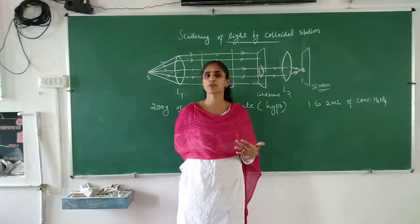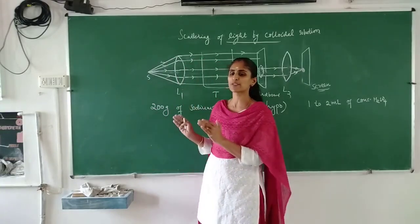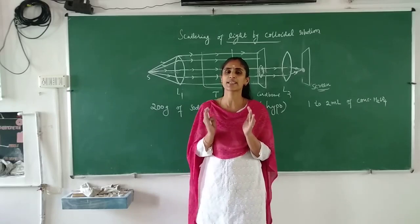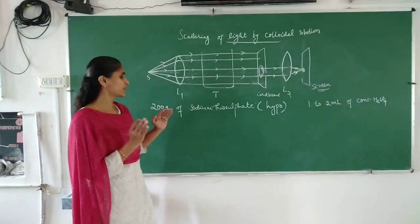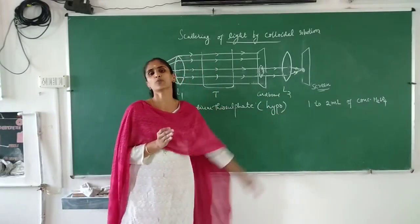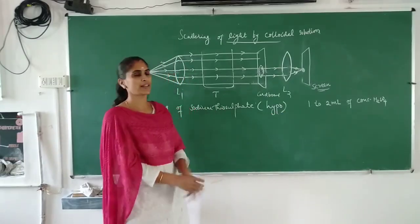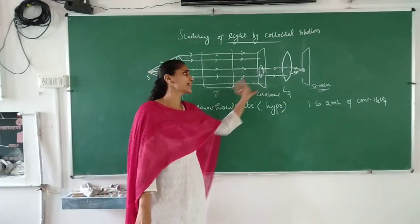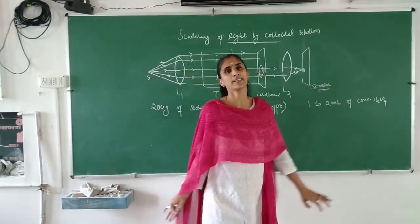This is a simple activity to demonstrate why the sky appears blue and the sun appears red. You only have to remember about the colloidal solution: 2 litres of clean water, 200 grams of sodium thiosulfate, and 1 to 2 ml of concentrated sulfuric acid added to get the colloidal solution. Low wavelength light is scattered, and high wavelength light reaches the other end, appearing on the screen.